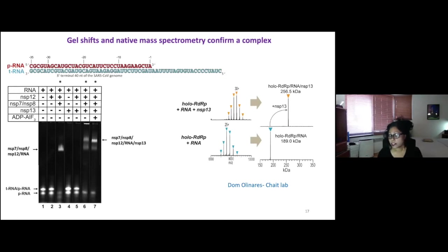Dom in Brian Tate's lab confirmed that this complex that we're seeing actually contained NSP13. So this was very good for us, encouraging for us to go ahead and do structural studies. And Patrick Cramer and Tarun Kapoor's lab showed that the ADP aluminum fluoride was inhibiting NSP13, meaning it was binding NSP13 and that's likely what's causing this intensification.